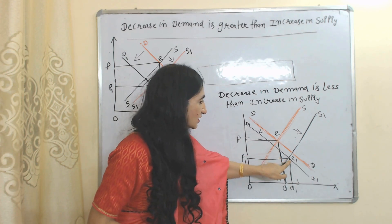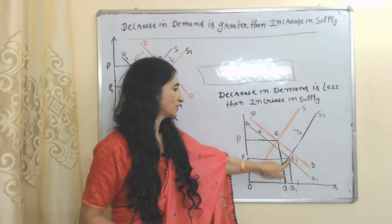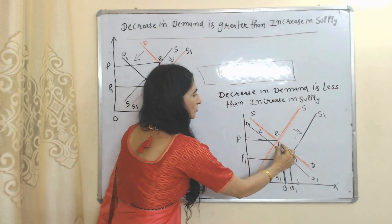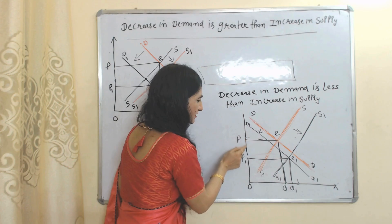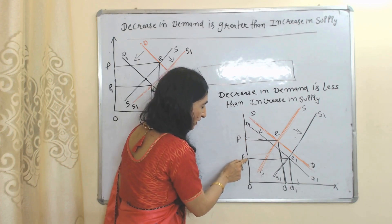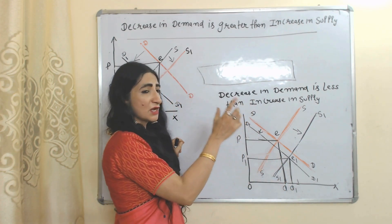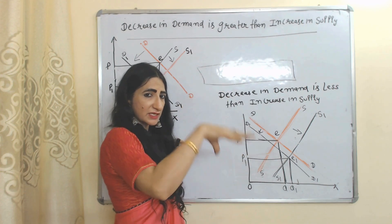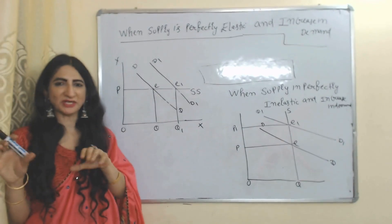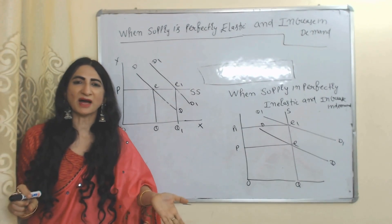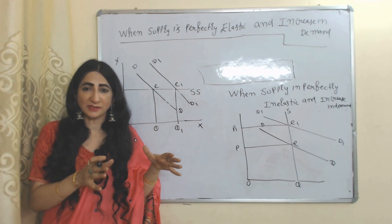Next case: decrease in demand is less than increase in supply. Initial equilibrium point is E, new equilibrium point is E1. At this new equilibrium point, demand reduces only a little bit but supply increases a lot. Obviously when supply is increasing, price reduces from P to P1. But overall quantity will increase because the proportion of reduction in demand is less compared to the increase in supply.